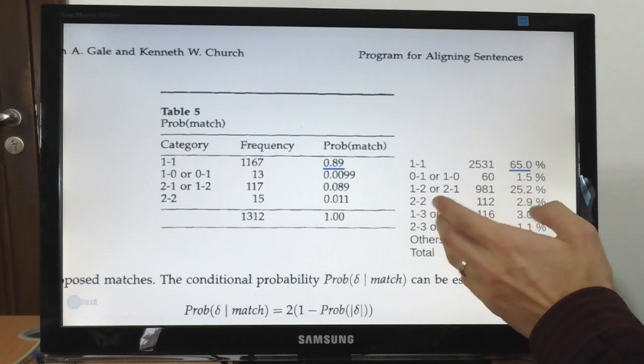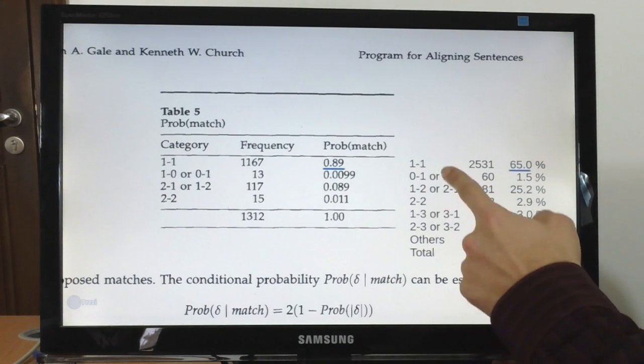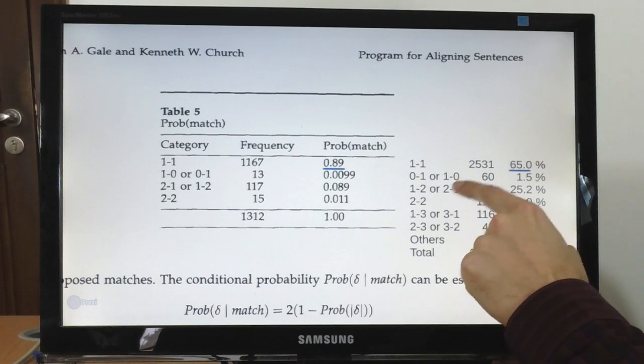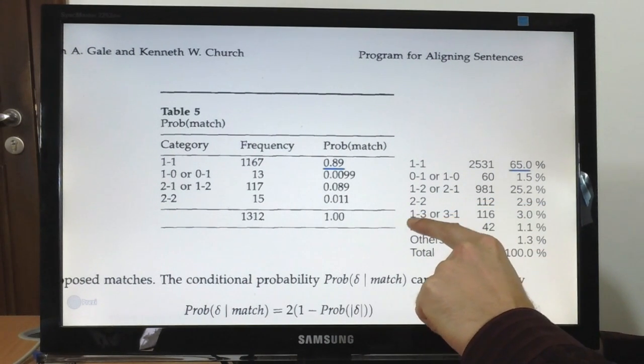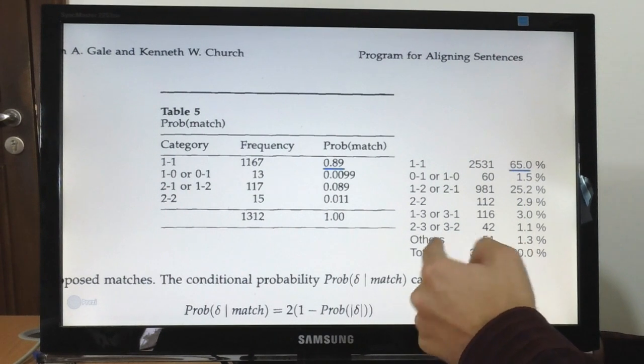And obviously there also happen more complicated alignments than those examined and considered by the Gale-Church aligner. We have sometimes three sentences matching one and other cases up to six sentences matching one in the source language.